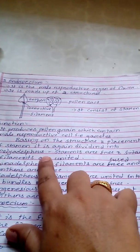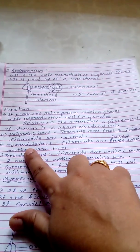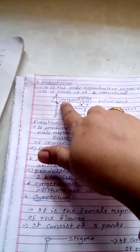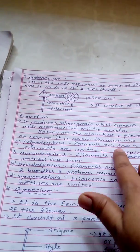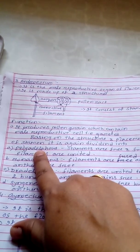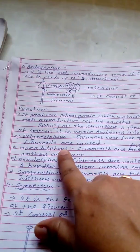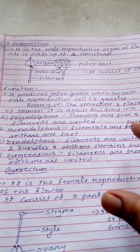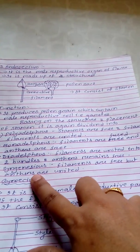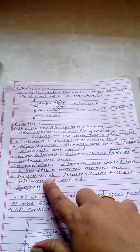The first type is polyadelphous, where the stamens are free and filaments are united. The second is monadelphous, where the filaments are fused and anthers are free. The third is diadelphous, where the filaments are united in two bundles and anthers remain free. The fourth is syngenesious, where the filaments are free but anthers are united.